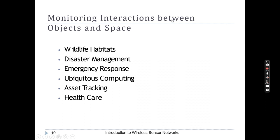The third category is monitoring interaction between objects and space. This includes wildlife habitat monitoring and disaster management. When land sliding occurs, it can easily be identified because appropriate sensors are placed in the land. If sliding happens in a heavy manner, it is prior-notified to the appropriate places so that early evacuation can be carried out and emergency response can also be done. Healthcare and asset or goods tracking can also be done.